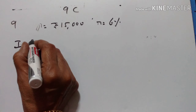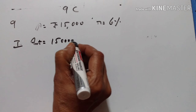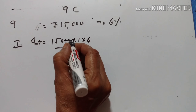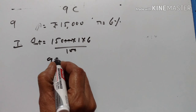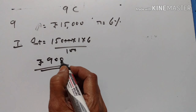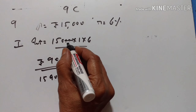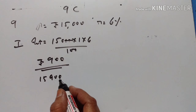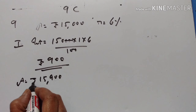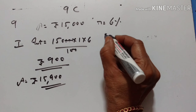For the first year, the interest is equal to P, T, R upon 100 — Rs. 900 is the interest for the first year. Amount is Rs. 15,900, that is interest plus the principal. Amount is equal to Rs. 15,900. This becomes the principal for the second year.